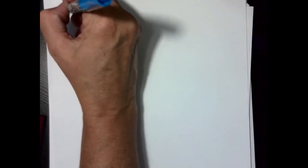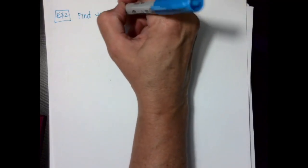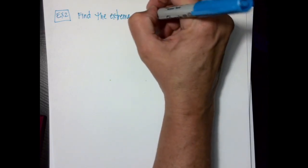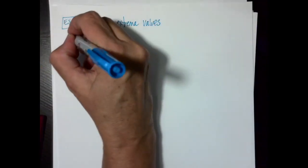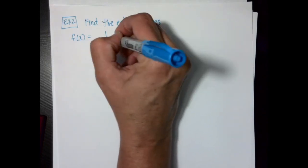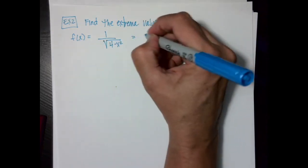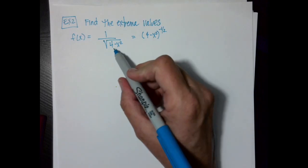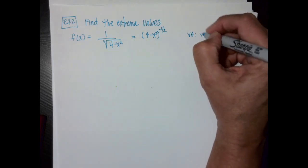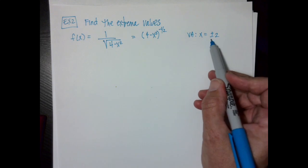For Example 2, we find the extreme values of f(x) = 1/√(4 − x²), rewritten as (4 − x²)^(−1/2). From the original function, there are vertical asymptotes at x = ±2, found by setting the denominator equal to zero. Taking the derivative using the chain rule: f'(x) = −(1/2)(4 − x²)^(−3/2) · (−2x).